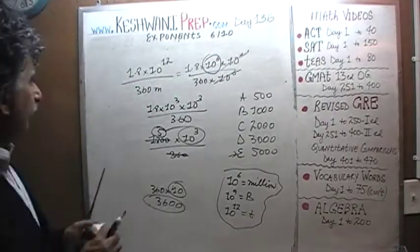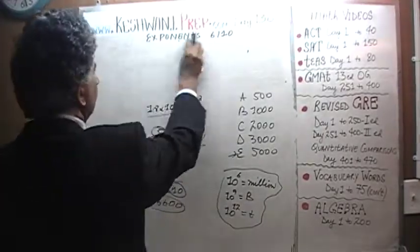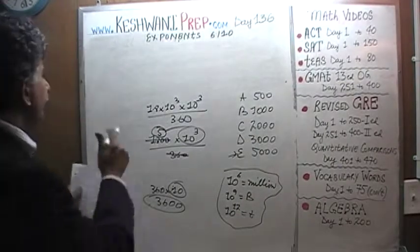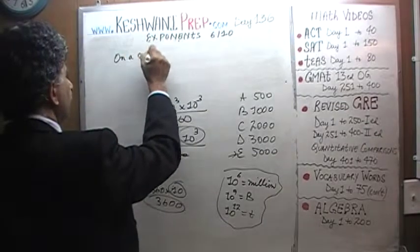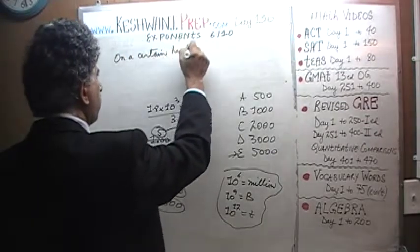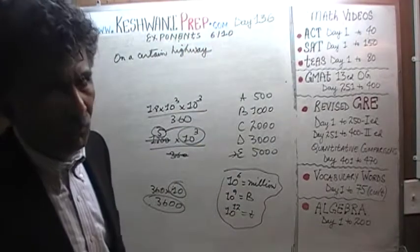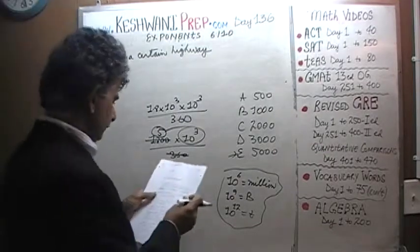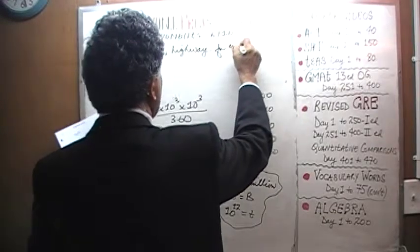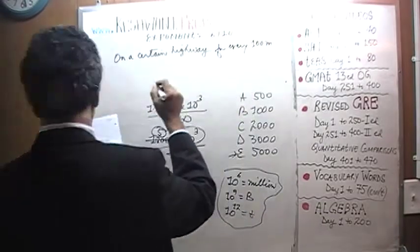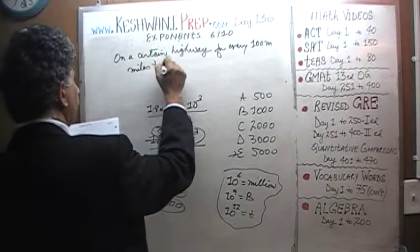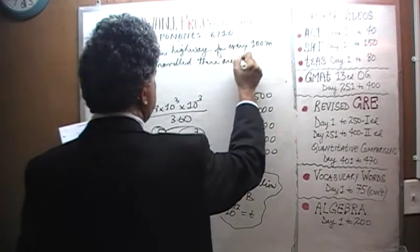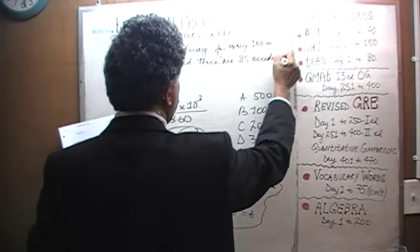Just do one more problem, shall we? Just do one more. We are told that on a certain highway, listen, I'm not going to write down all the nitty-gritty, I'm just going to speak most of the stuff. On a certain highway, on average, for every 100 million miles traveled, on average there are 85 accidents.